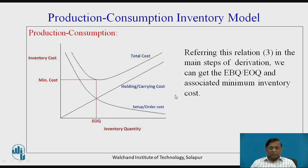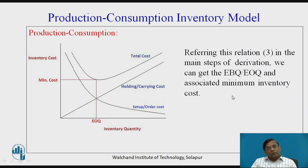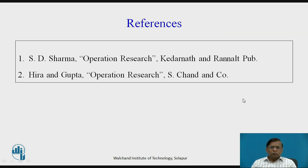To conclude, this is a graph between inventory cost versus inventory quantity. The total cost curve shows a point of interest — EOQ or EBQ in case of manufacturing — and the associated minimum inventory cost. This is what we will be deriving: the economic batch quantity and associated minimum inventory cost, which will be discussed in the next video. The two recommended books are one by S.D. Sharma and the second by Hira and Gupta. Thank you.